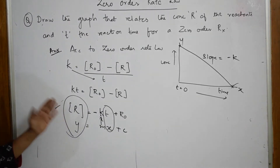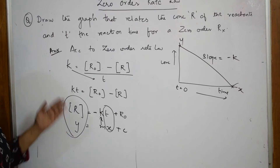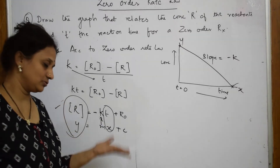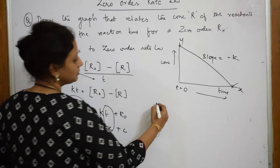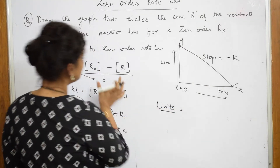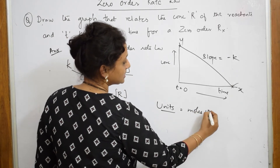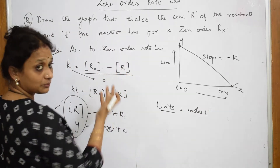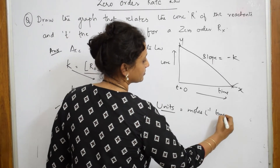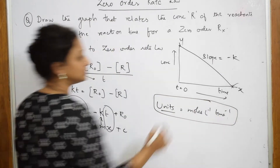This is how you derive or show the graphical representation for the zero order reaction. If you want to write the units as well, the units equal the change in concentration — moles per liter — divided by time, which gives moles liter⁻¹ per unit time. So this is your zero order kinetics.